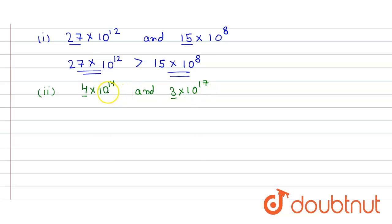So we just compare only the powers of 10. By comparing we can say that 4 into 10 raised to power 14 is less than 3 into 10 raised to power 17, because 17 is much greater than 14. So 3 into 10 raised to power 17 is greater than 4 into 10 raised to power 14, and that's our answer.